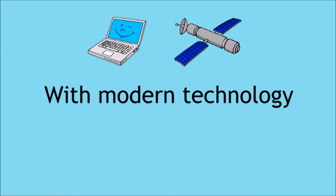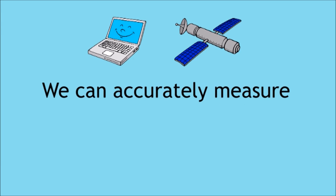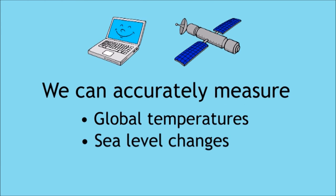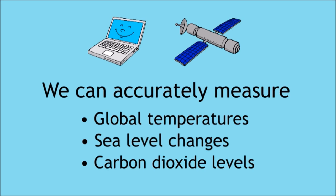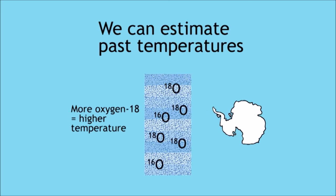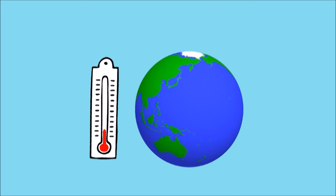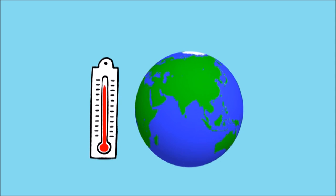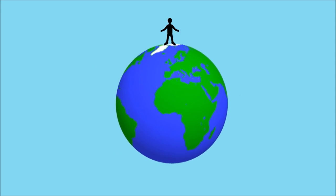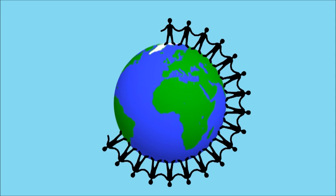To summarize, modern technology has allowed us to track rises in global temperatures, sea levels, and carbon dioxide levels with a level of accuracy and reliability that was previously unachievable. We're also able to estimate global temperatures from millions of years ago using such methods as isotope ratio analysis. We now have a clear body of evidence which suggests not only that global warming is taking place, but that it is taking place at an alarming rate. This position is accepted by the United Nations and virtually all countries. It is now time for the world to act.